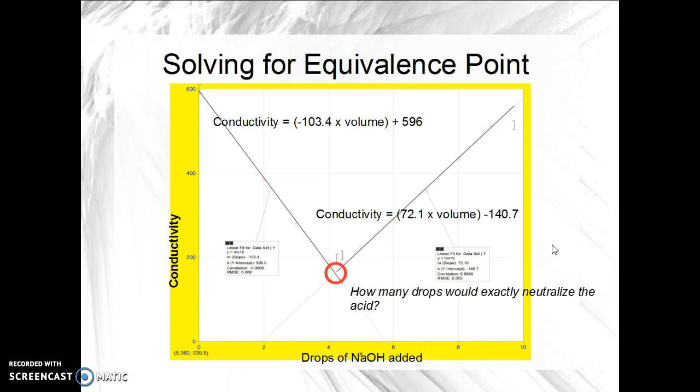So how many drops would exactly neutralize the acid? We must be looking for the point at which the two lines intersect. That would be the lowest point on this two straight line curve.